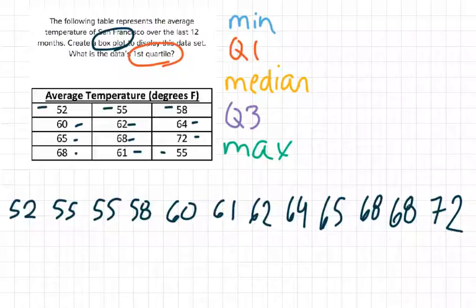Did we get them all? Yep. Okay, so I've lined them up from least to greatest in order, and now we can go ahead and find these five values, minimum, quartile one, median, quartile three, and maximum.